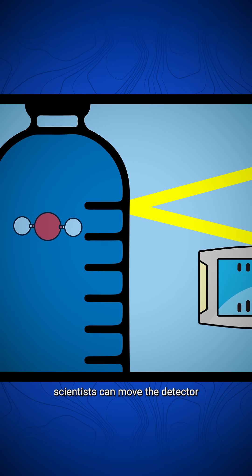To get past this, scientists can move the detector or offset it away from the noisy region. That way, when the scattered photon exits the bottle, its signal isn't overwhelmed. This is spatially offset Raman spectroscopy.